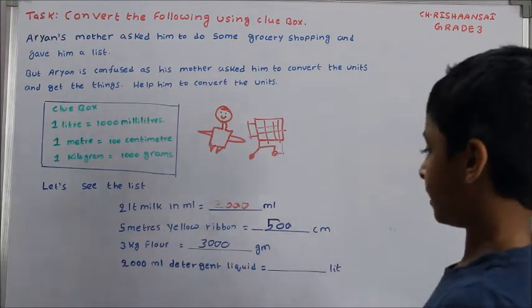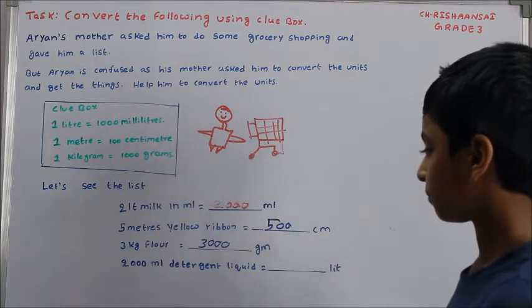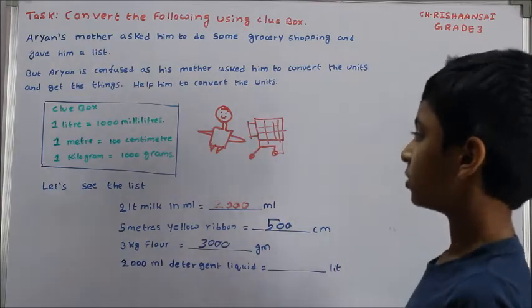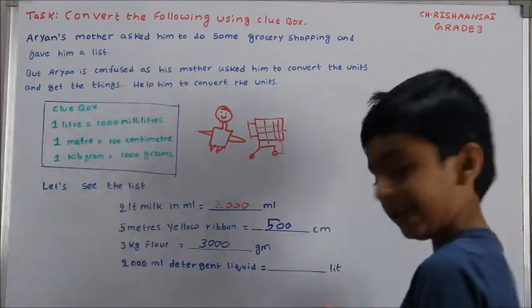2000 ml detergent liquid. So it will be 2 liters.